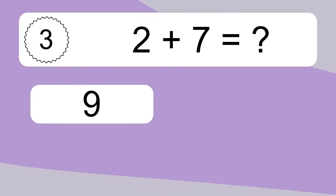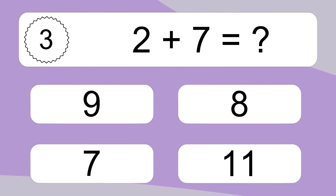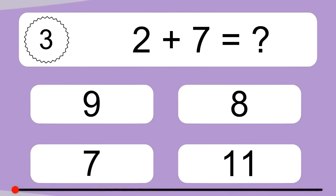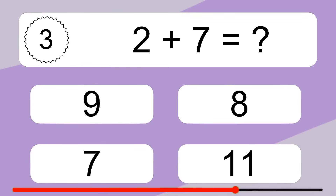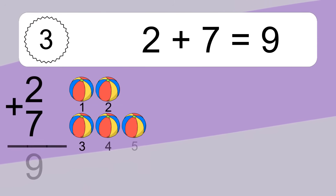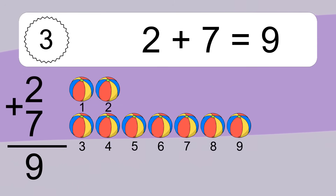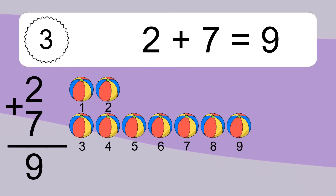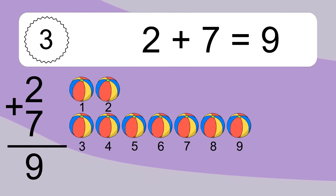2 plus 7 equals what? 2 plus 7 equals 9. Let's count it: 1, 2, 3, 4, 5, 6, 7, 8, 9.